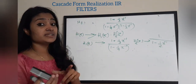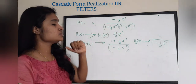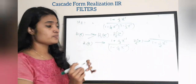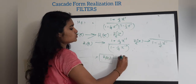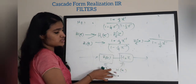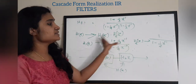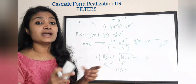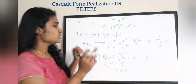This is what we are doing in cascade form realization — realizing a transfer function as a cascaded form of two other transfer functions. H(z) is realized as H1(z) followed by H2(z). We have done the splitting part. Now we have to realize H1(z) and H2(z) separately using direct form 2 realization, then combine the two realizations to obtain our cascade form realization.